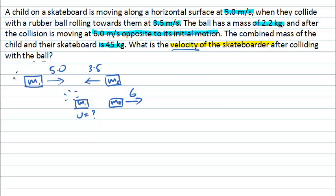If we consider the system that we're going to analyze here to be the skateboarder and the ball, then we can see that as far as external forces on those objects are concerned, the net force on our system will be zero.